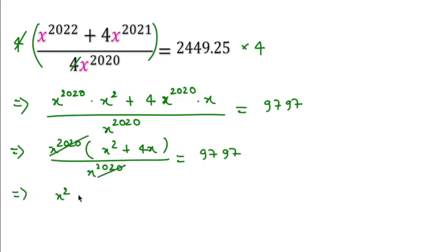So we can write x^2 plus 4x, and this will come to this side as minus 9797 equals 0. This is a quadratic equation.